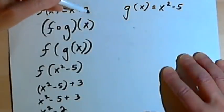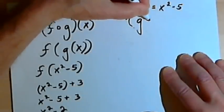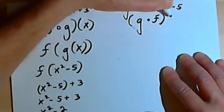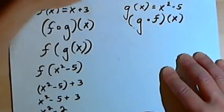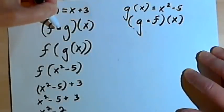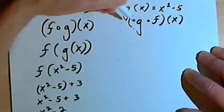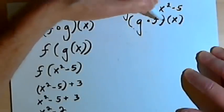Now, if we rearrange these, if we try to find out what g compose f of x is, we're very likely going to get a different answer. In other words, this is not like multiplication where it doesn't matter what order you do things in.